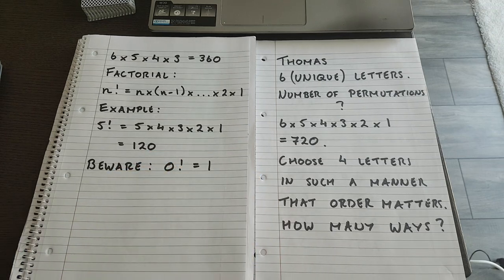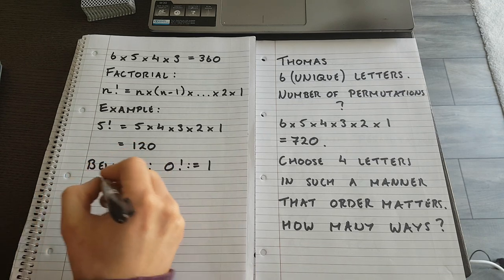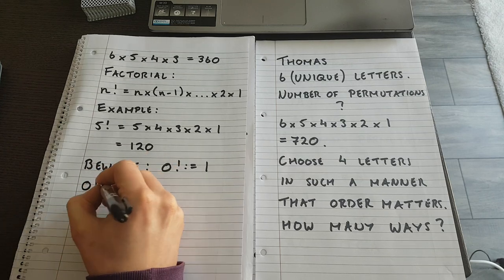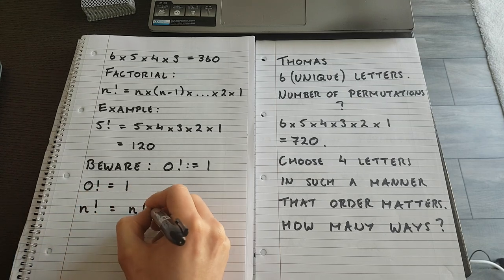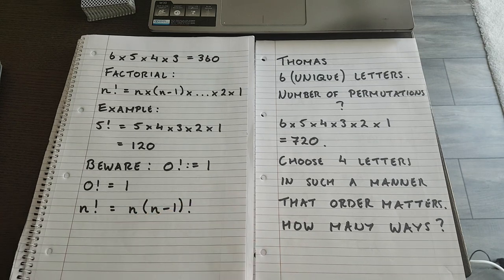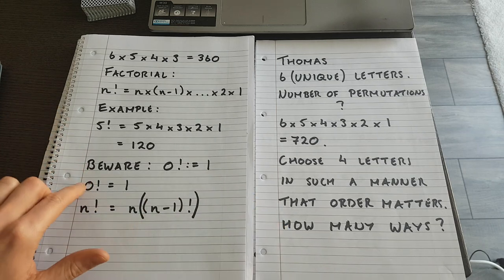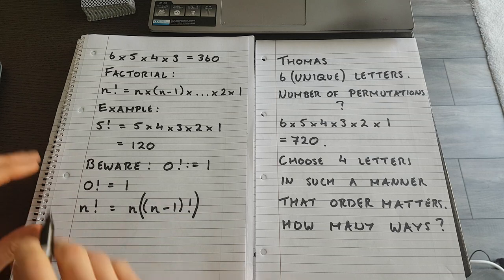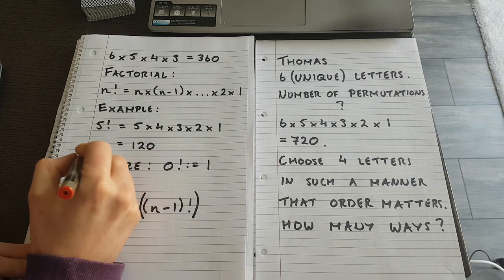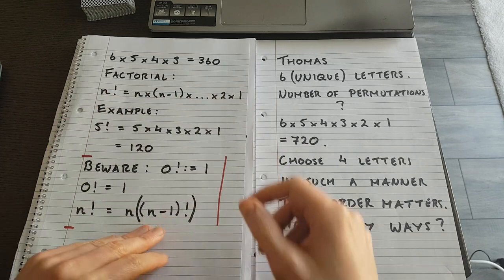Zero factorial is defined as being equal to one. The formal recursive definition is: zero factorial equals one, and n factorial equals n times (n minus 1) factorial. So one factorial is one times zero factorial, which is one times one. Two factorial is two times one factorial, and so on. Just be aware that if you see zero factorial, you want to be a little careful — it equals one.